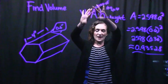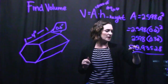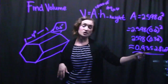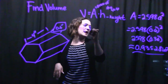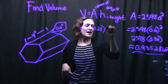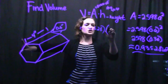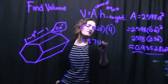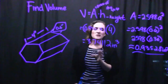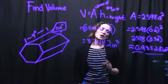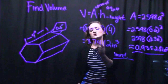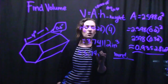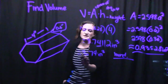Now we take that area and plug it into our volume formula. The area is 0.93528 square inches. Going back to the volume formula, this represents A, so we plug in 0.93528 and multiply it by the height, which is 4 inches. Multiplying gives us 3.74112 cubic inches. Remember, volume is always units cubed. Rounding to the nearest hundredth, we get approximately 3.74 cubic inches as the volume.